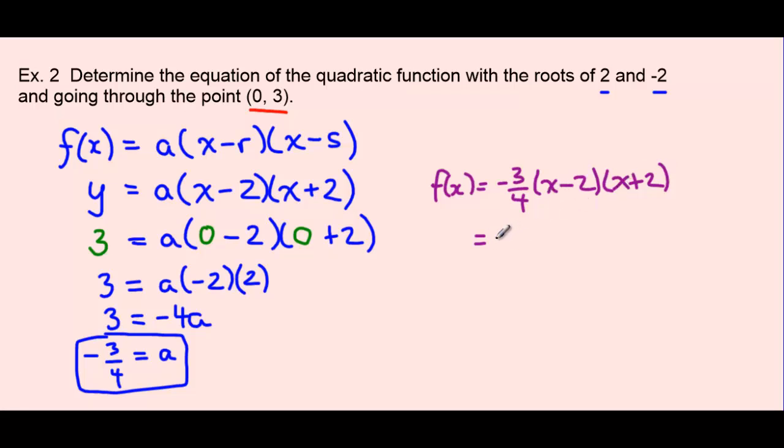We will foil this out here. So negative 3 fourths can stay here for now. We have x squared. The negative 2x and the positive 2x will cancel. So then we're just left with minus 4. It's a difference of squares.